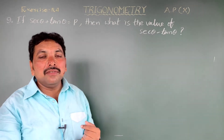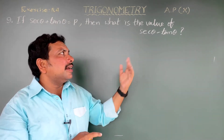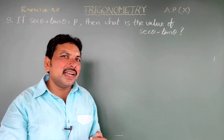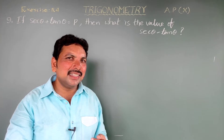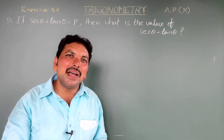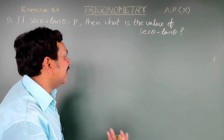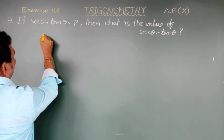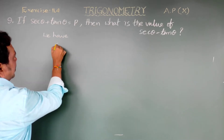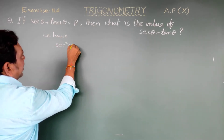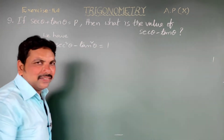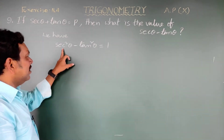Let us solve in terms of secant theta and tan theta. The second trigonometric identity is: secant square theta minus tan square theta equals 1. Let us use that.